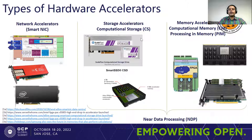These purpose-built hardware can be classified into three major buckets, as we see on this slide. The one on the further left is network accelerators, which are network interface cards with built-in packet processors, which can decode a network packet and protocol headers at the line rate. The network accelerators offload the host CPU by supporting packet pre-filtering, rerouting the packet, and load balancing right at the network interface level.